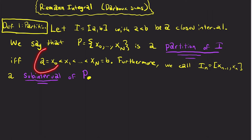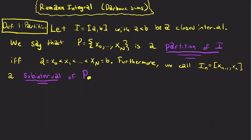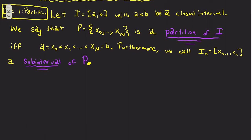Whenever x₀ is equal to A, x₁ is greater than x₀, and so on, until you get to the last endpoint, which is B. Also, we call I sub n, which is x sub n−1 to x_n, to be a sub-interval of P. It's also a definition that we'll use. So relatively simple definition here, and sort of a building block.